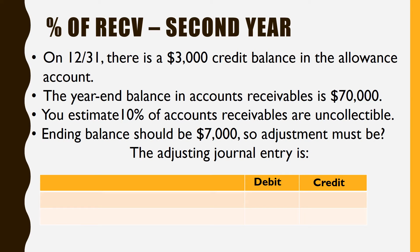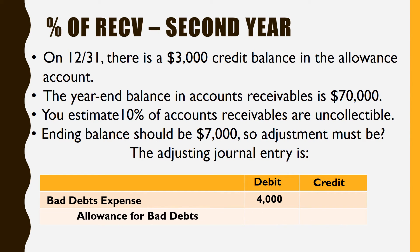So if you know that, what should your adjustment be? Don't get mixed up on the account — it's still bad debt expense. I started with $3,000 and I want it up to $7,000, so my adjustment has to be for $4,000. Still the allowance for bad debts, still for $4,000. When you look at the receivables method, your computation gives you the ending balance, and then you have to figure out what your adjustment needs to be.